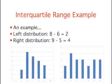Let's go back to our two different distributions of test scores. For the left distribution, the 75th percentile is 8 and the 25th percentile is 6, making the interquartile range 2. For the right distribution, which has greater spread, the 75th percentile is 9 and the 25th percentile is 5, making the interquartile range 4.